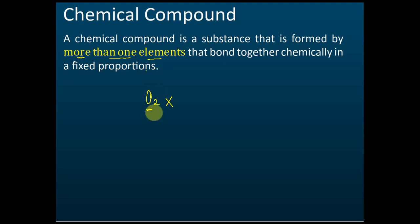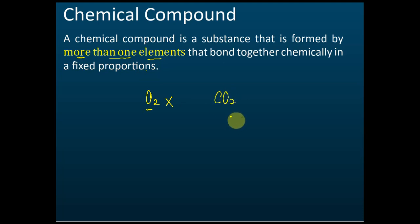Oxygen has just one element, so it is not a chemical compound. How about carbon dioxide? Is this a chemical compound? Yes, because there are two types of elements.